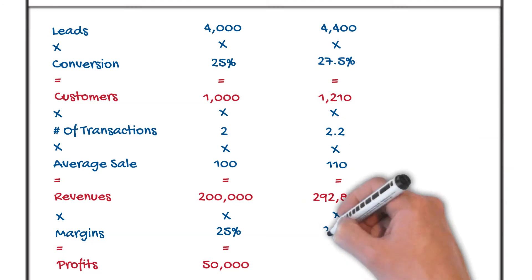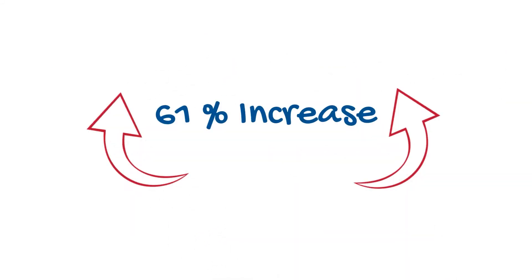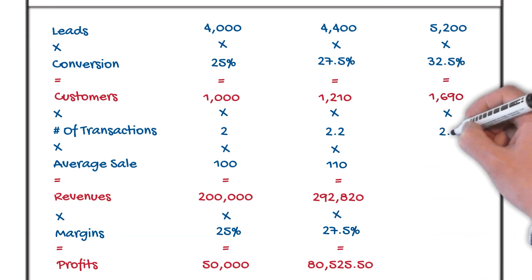Then, we go to $80,525.50. That's a 61% improvement in your bottom line profits by just working on five areas. Now, imagine we could do it increased by 30% in each of the areas. Look at the numbers. The numbers become staggering.